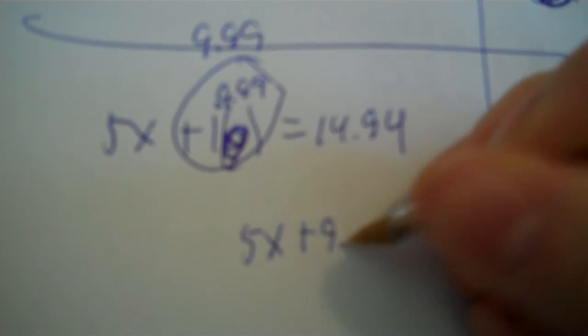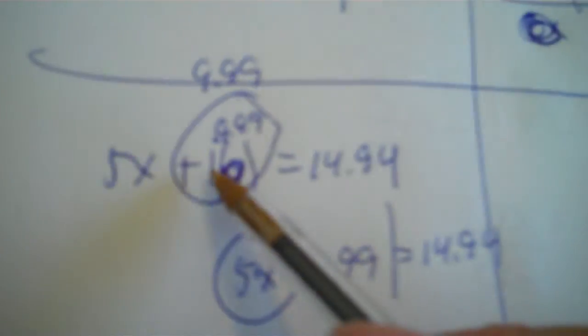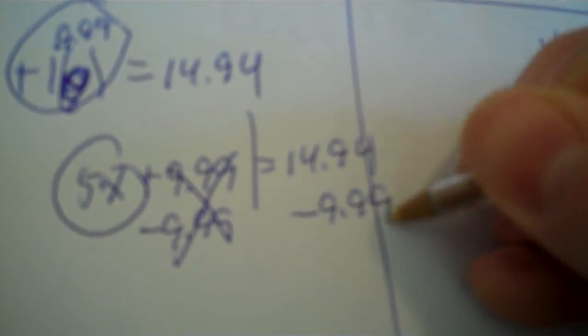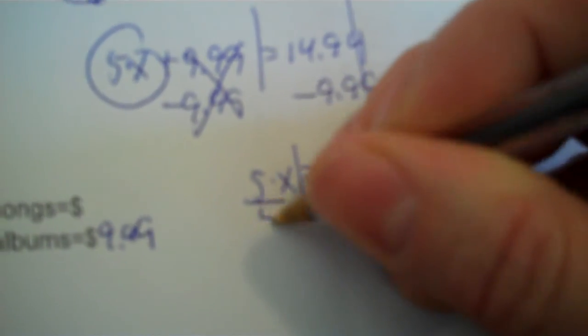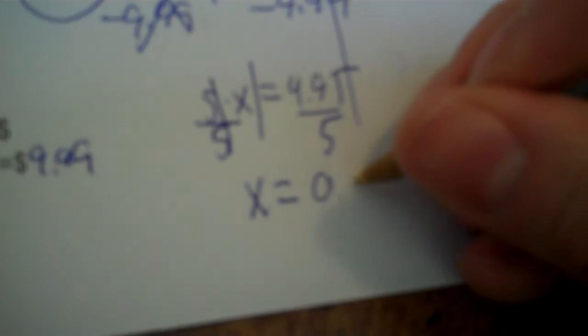So you go to your Y's. 9.99, that's your albums. 5X plus 9.99 equals 14.94. By the way, when you multiply 1 by something, it's just itself. So you have 5 times X equals 4.95. Ninety-nine cents, 0.99. Done.